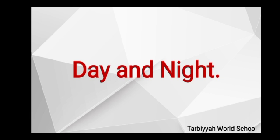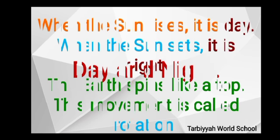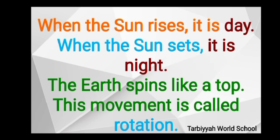When the sun rises it is day — the sun rises from the east. When the sun sets it is night — sunset happens in the west. The earth spins like a top; this movement is called rotation. The rotation of the earth causes day and night. The part of the earth that faces the sun has day, and the other part has night.